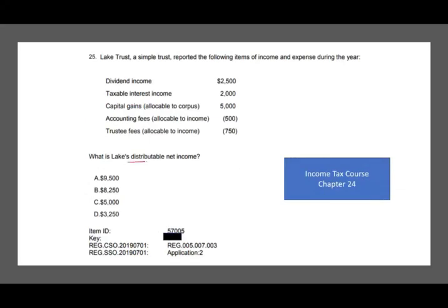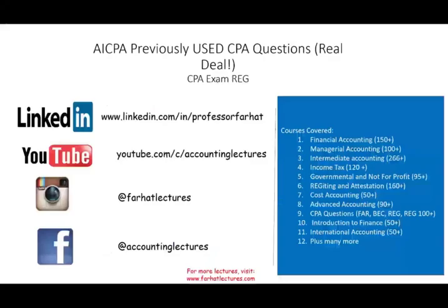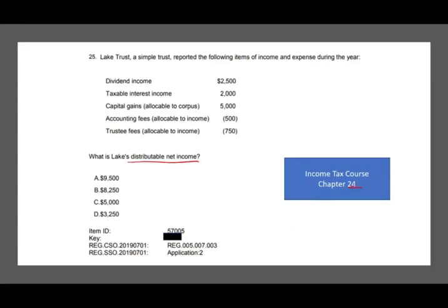What is Lake's distributable net income, which is DNI? This is basically trust. I covered this in chapter 24. Lake Trust, a simple trust, reported the following items of income and expenses during the year. For the trust, you need to know what's included in distributable net income. Is dividend income included? Yes. Is taxable interest included? Yes. Capital gain? Usually yes, but it's allocable to corpus - it's allocable to principal. That's not included. Accounting fees allocable to income? Yes, they're deducted. Trustee fees allocable to income? That's also negative.